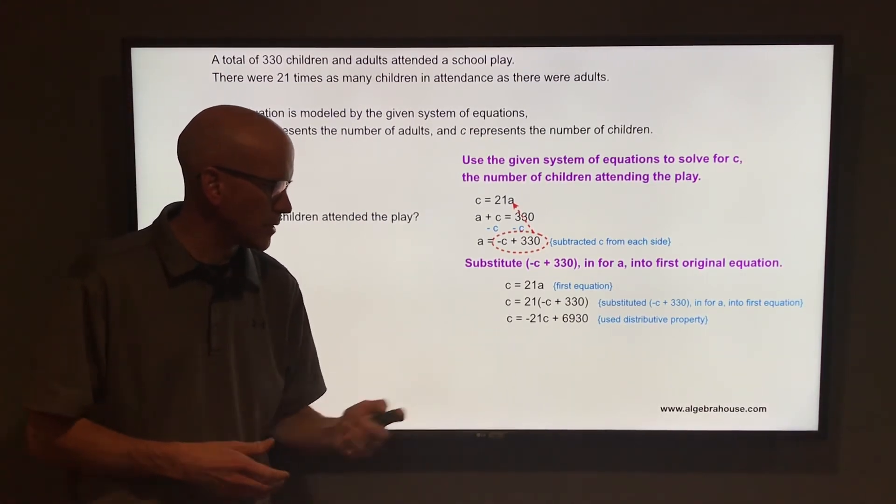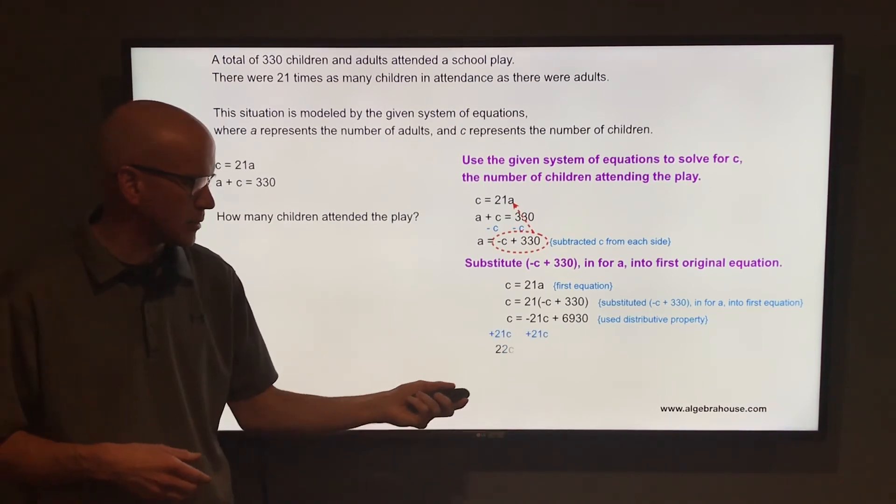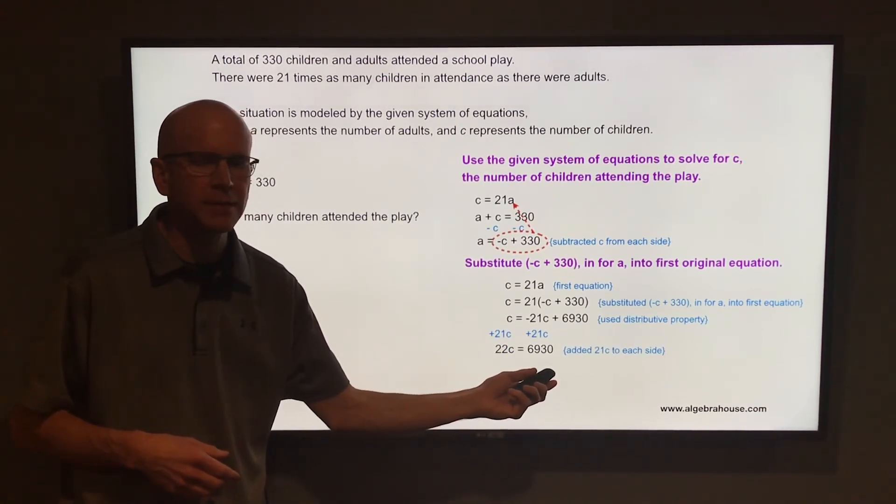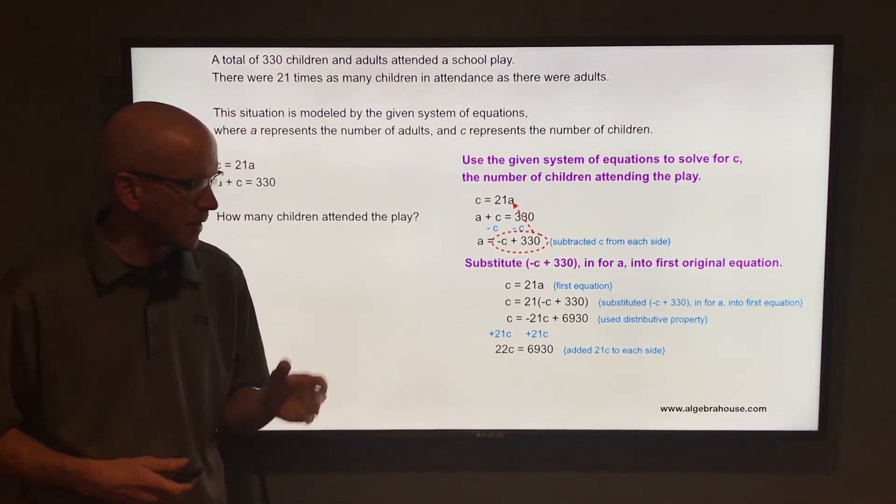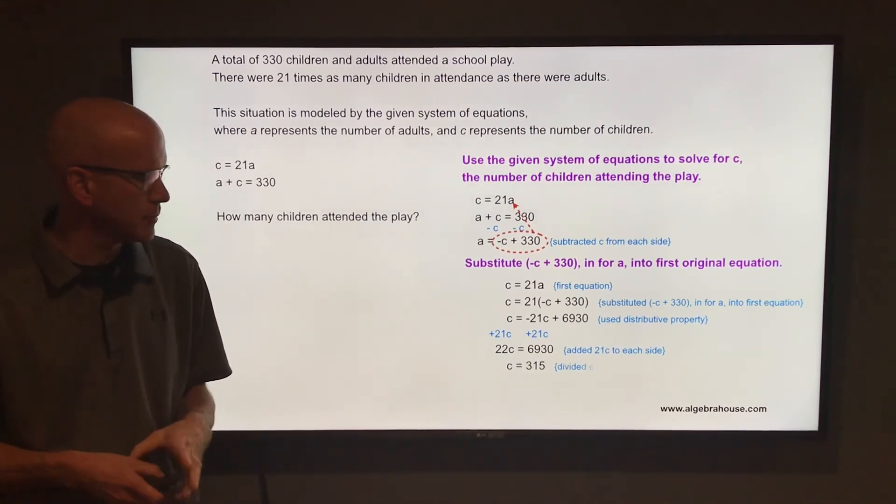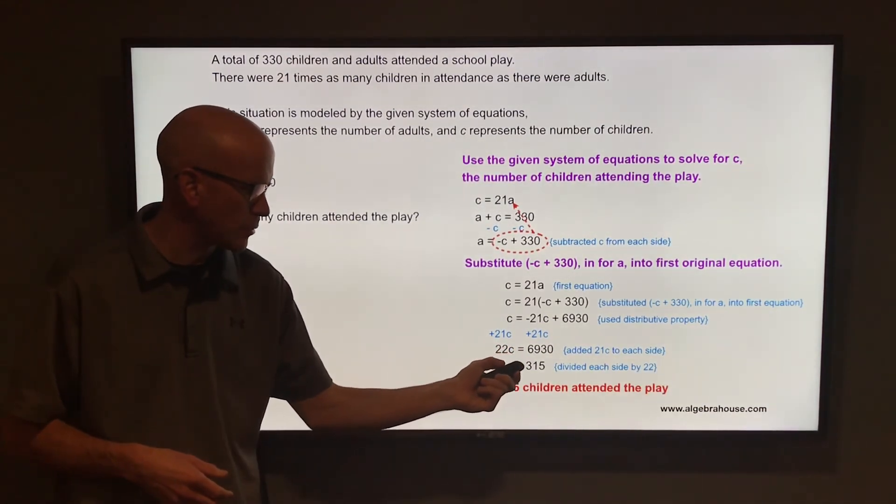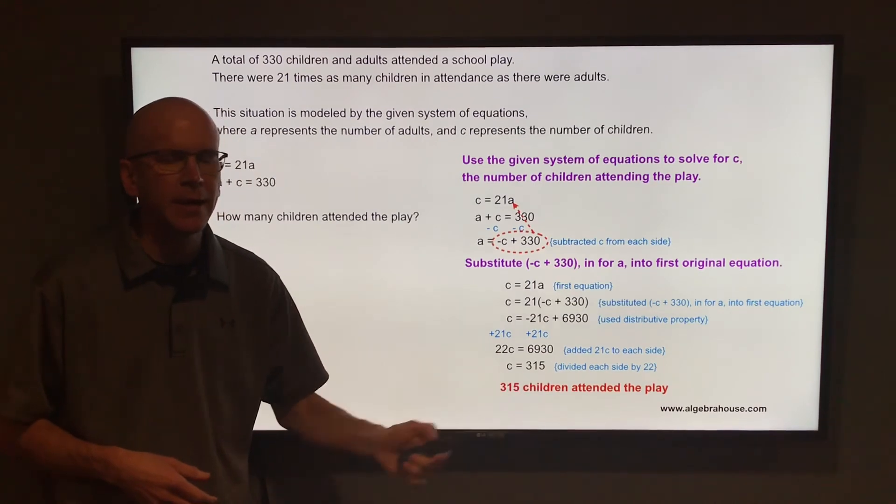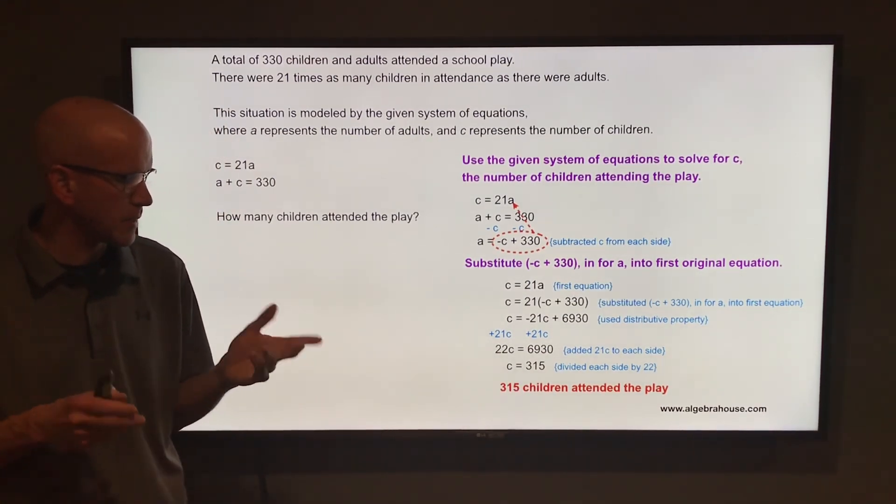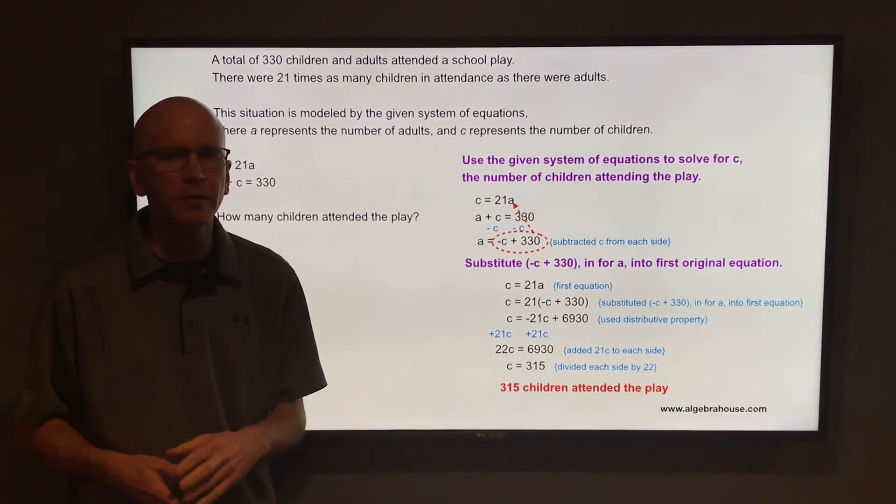Get the C's to one side, so add 21C to each side. When you do that, you get 22C equals 6,930. And then finally, divide each side by 22. If you divide 6,930 by 22, that is 315. So the number of children that attended the play is 315.